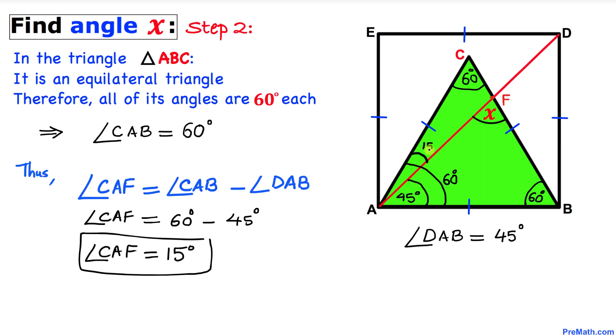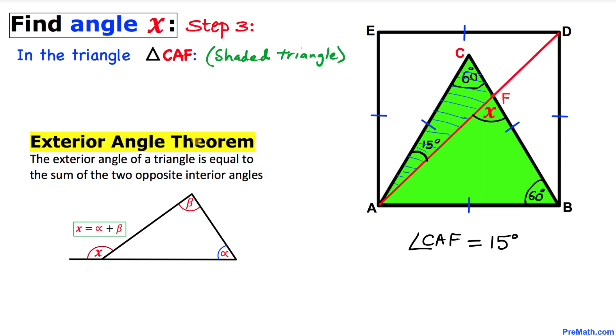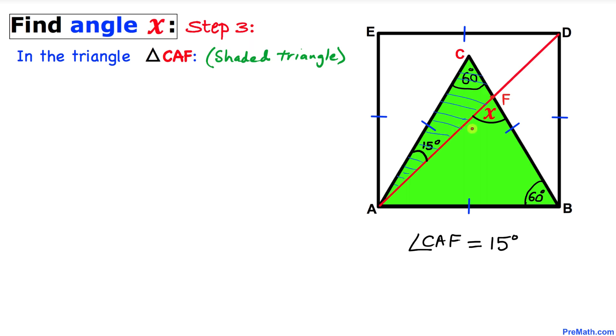So this angle CAF turns out to be 15 degrees. And here's our final step. Let's focus on this shaded triangle CAF. Now let's recall the exterior angle theorem. According to this theorem, the exterior angle of a triangle is equal to the sum of two opposite interior angles.